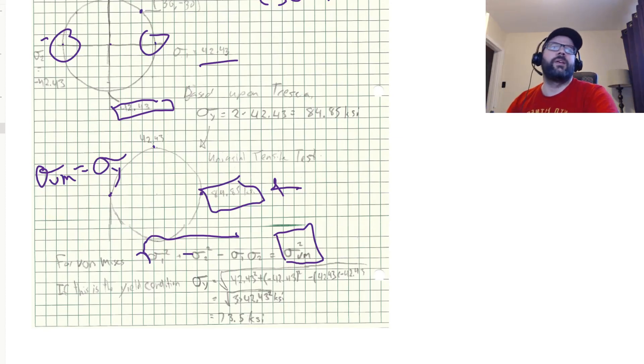So we end up with our yield strength is equal to the square root of 3 times 42.43 squared, which gives us 73.5 KSI.